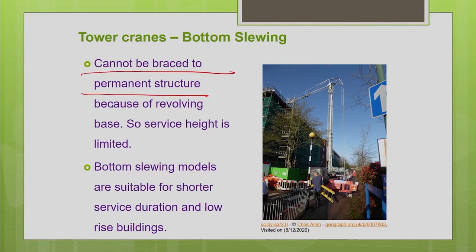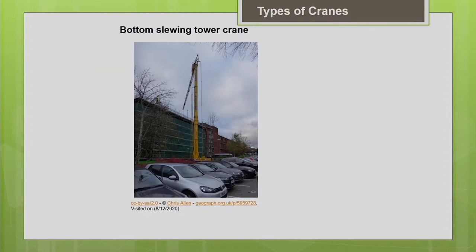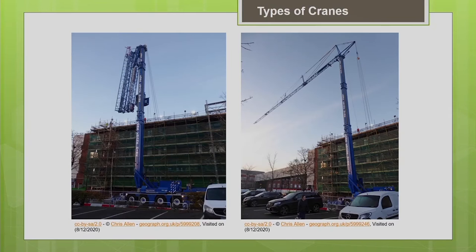Bottom slewing tower cranes cannot be braced to the permanent structure because of the revolving base, so service height is limited. They are suitable for shorter service duration and low-rise buildings. Self-erecting mechanisms with hydraulic jack systems make mobilization and erection very easy. Outriggers must be used when tire mounted to enhance stability and lifting capacity.